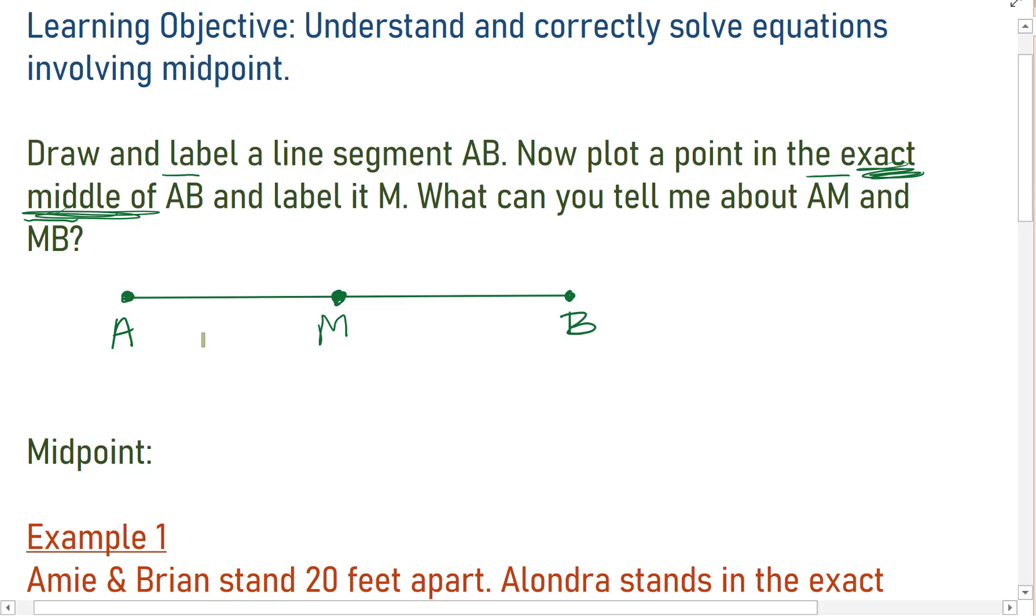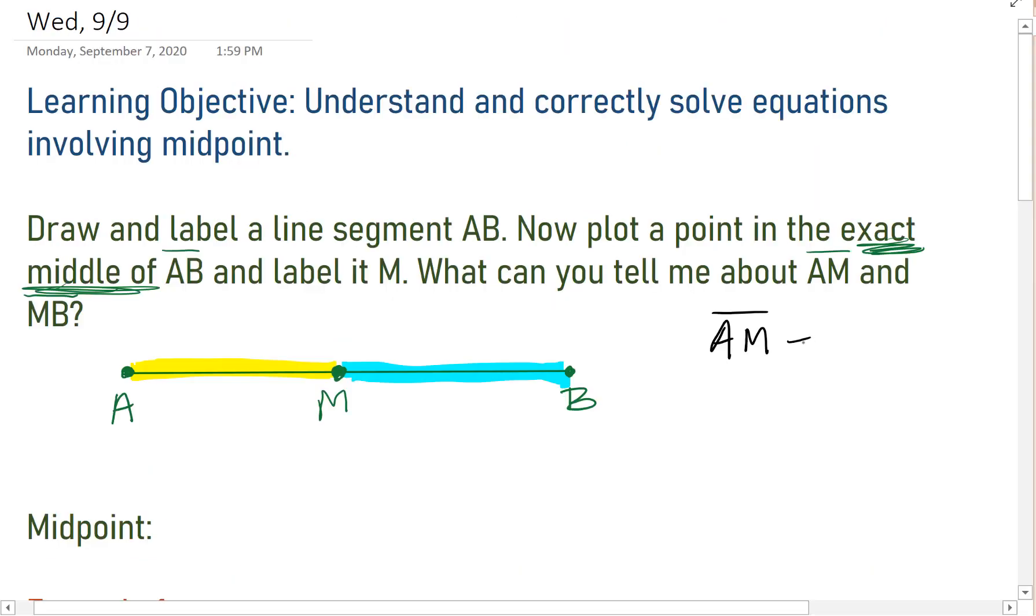If M is in the exact middle, then the distance from A to M is the same as the distance from M to B. That means that the length of segment AM is equal to the length of MB.